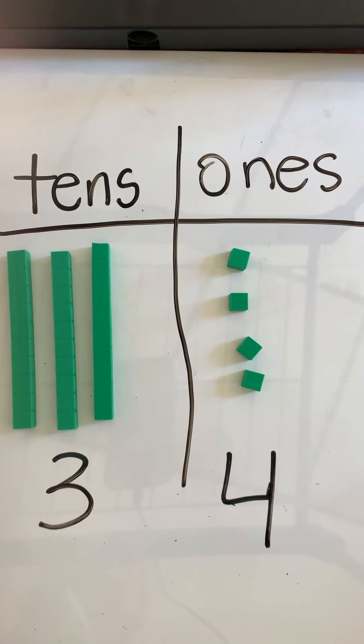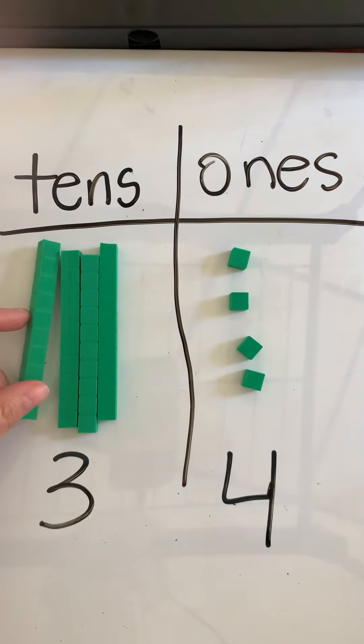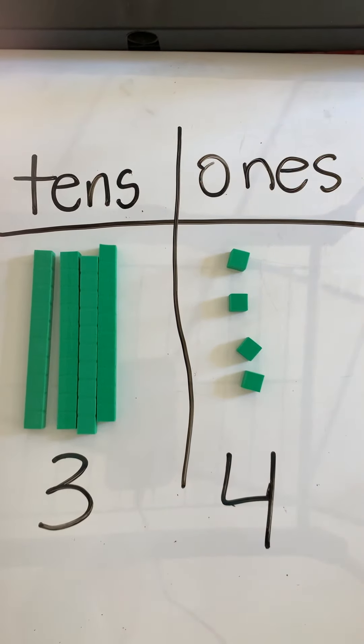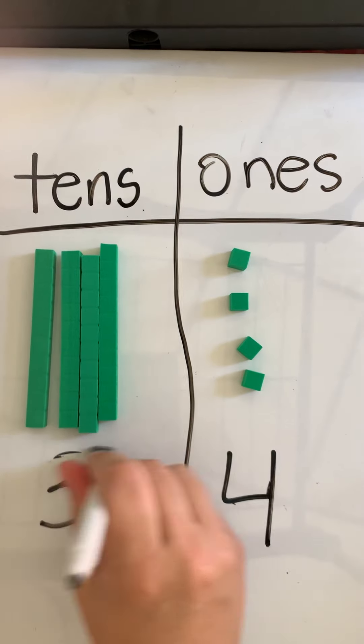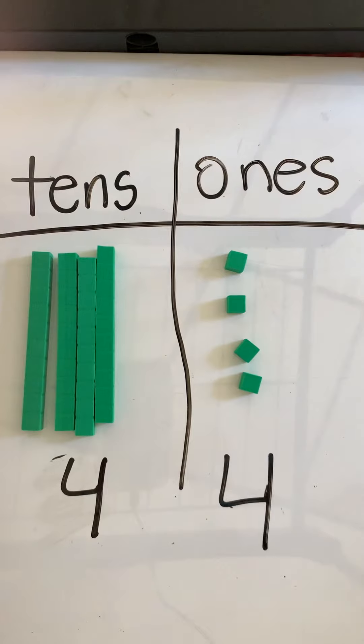So if I want to know 10 more than 34, I'm going to look at my tens place and I know that more means my number is going to get bigger. So I'm going to add another 10. So 10 more than 34 would make 44.